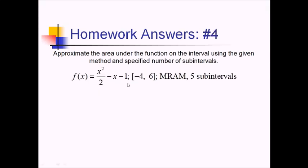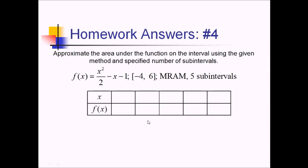For this problem, we're trying to approximate this quadratic over negative 4 to 6 using MRAM with 5 subintervals. That means we're going to split this up into rectangles that each have a base of 2, because there's a total distance of 10 split up over 5 subintervals, and then we're going to take the midpoint of each of those intervals. Making my table here, I've got midpoint x values: negative 3, negative 1, 1, 3, and 5.